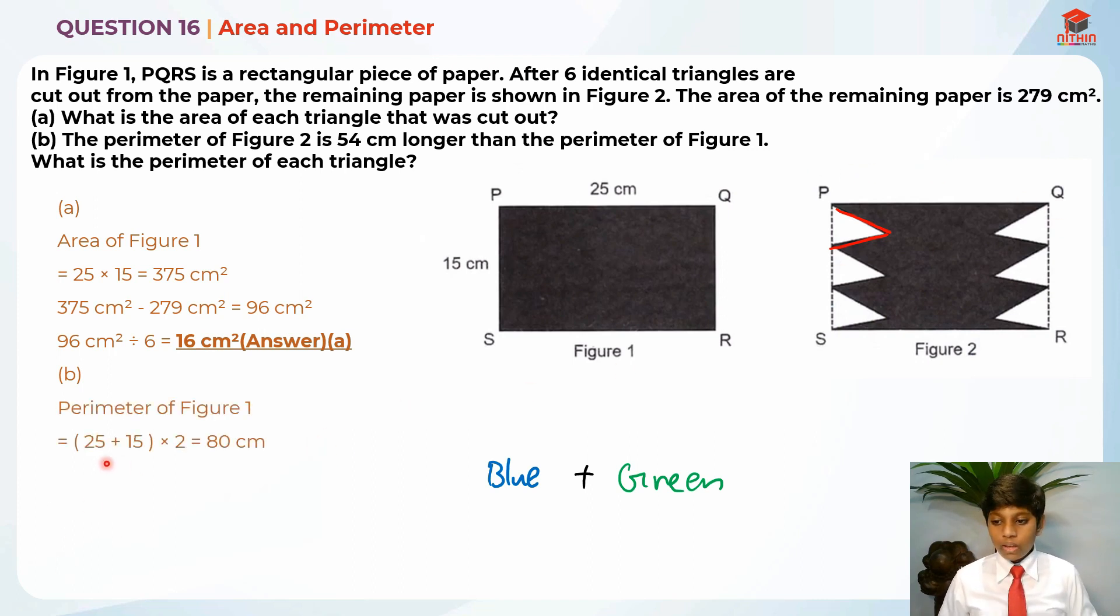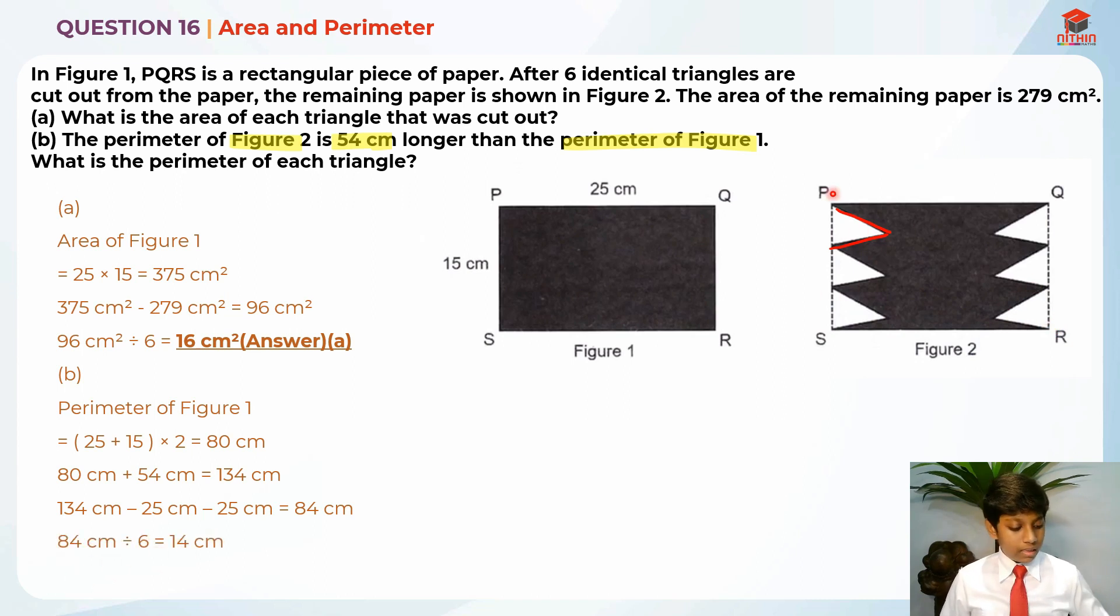Perimeter of figure 1 is 25 plus 15 times 2, which is 80 cm. The perimeter of figure 2 is 54 cm longer than perimeter of figure 1. So I'm going to take 80 cm plus 54 cm, which is 134 cm. After that, I'm going to minus off the lens: 134 minus 25 minus 25 gives me 84 cm. 84 cm divided by 6, because there's 6 triangles, and each of the two lens are combined together, equals 14 cm. So the perimeter is 14 cm plus 5 cm, which gives us 19 cm as the answer for part B.